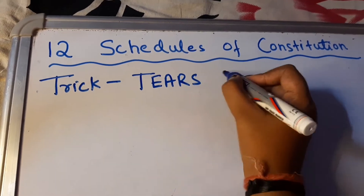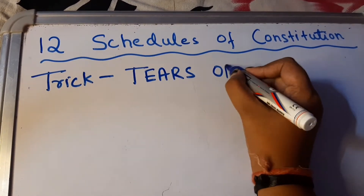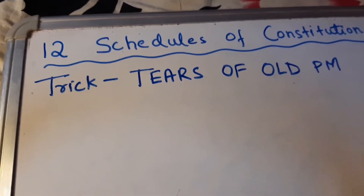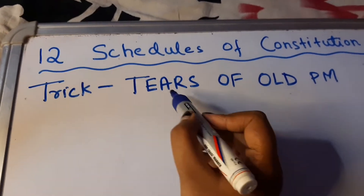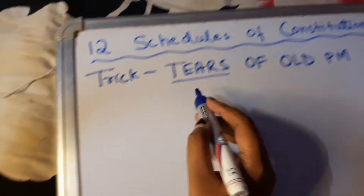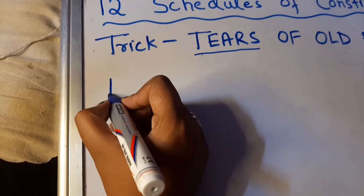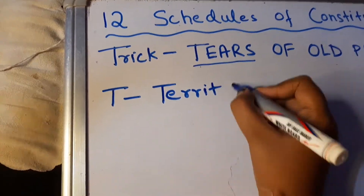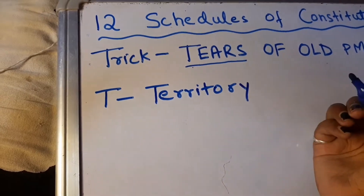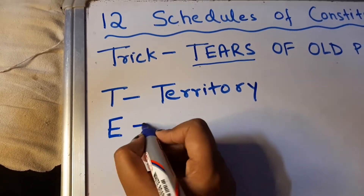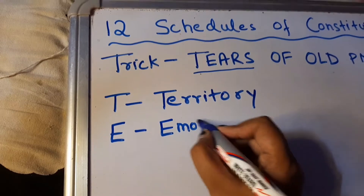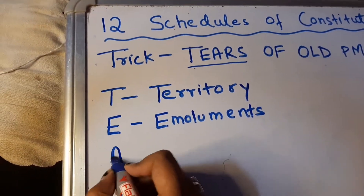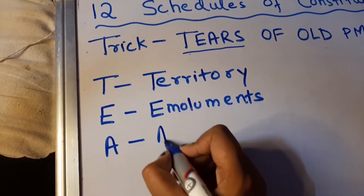The mnemonic is 'TEARS OF OLD PM' — let's simplify it. T deals with Territory, meaning Schedule 1 of the Indian Constitution deals with territory. E stands for Emoluments, which is Schedule 2. With A, that is Schedule 3, we get Affirmations.